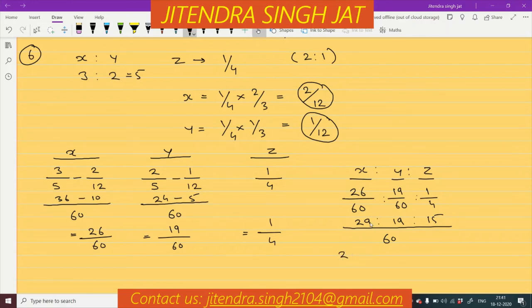The new profit sharing ratio among the partners is 26 is to 19 is to 15. I hope the question is clear to everyone. Thank you very much.